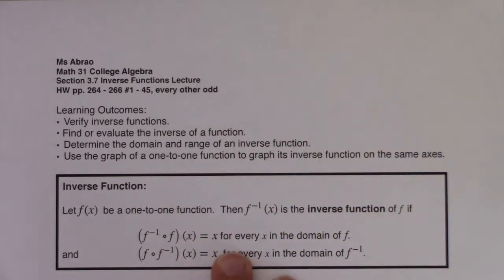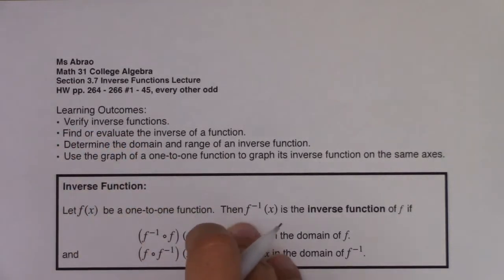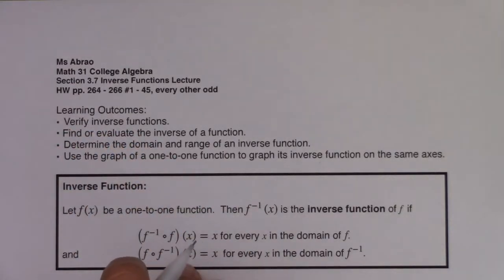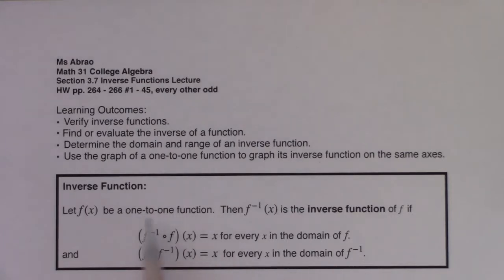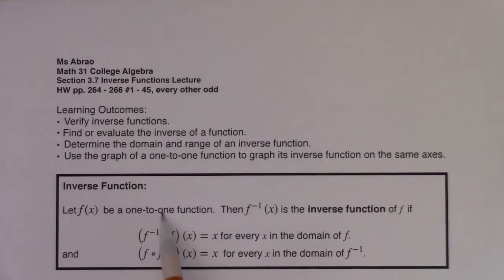Let's get the definition of an inverse function down. Let f of x be a one-to-one function. If you remember from earlier in this chapter, to be a one-to-one function, not only do you have to pass the vertical line test to be a function, but you have to pass the horizontal line test to be a one-to-one function. That notion of one-to-one functions was discussed in section 3.1.